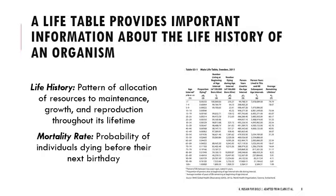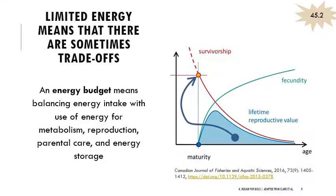We can also determine mortality rate from life table data — that's the probability of individuals dying before their next birthday. Expanding on life history and tying it to natural selection, the energy budget means there are trade-offs. You have to balance energy intake with using that energy for basic metabolism, reproduction, parental care — think about how much time, money, and energy it costs to be a parent — and energy storage. Because energy is limited, we see trade-offs between survivorship and fecundity, which is a common theme in natural selection.